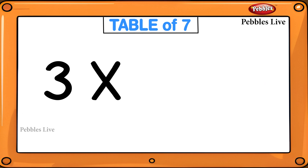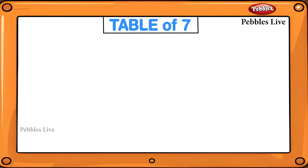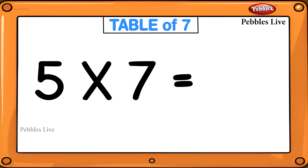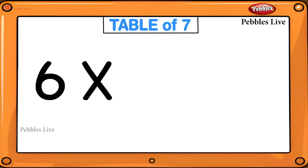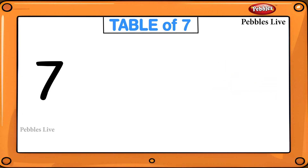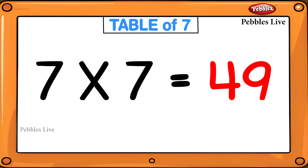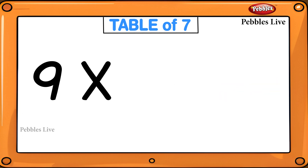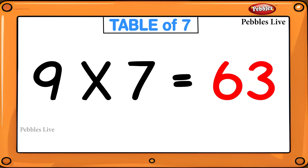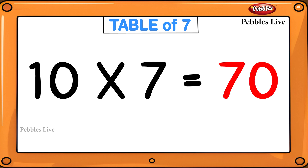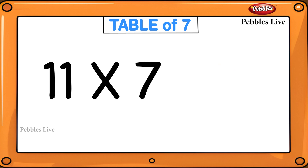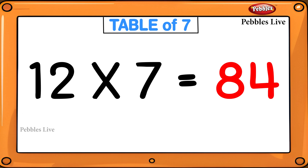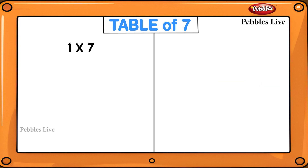3 sevens are 21, 4 sevens are 28, 5 sevens are 35, 6 sevens are 42, 7 sevens are 49, 8 sevens are 56, 9 sevens are 63, 10 sevens are 70, 11 sevens are 77, 12 sevens are 84.